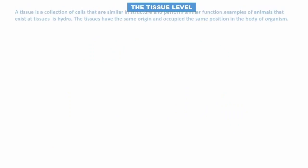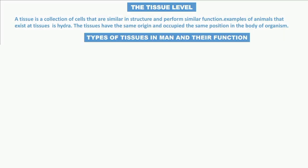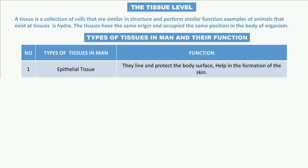The tissue level: a tissue is a collection of cells that are similar in structure and perform similar functions. An example of an animal that exists at the tissue level of organization is Hydra. Tissues have the same origin and occupy the same position in the body organism.